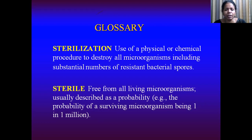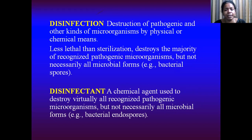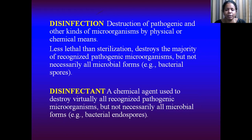So when do we call a surface or a material sterile? When it is free from all living microorganisms, usually described as a probability. Disinfection is the destruction of pathogenic and other kinds of microorganisms by physical or chemical means. It is less lethal than sterilization and destroys the majority of recognized pathogenic microorganisms but not necessarily all microbial forms — it has no effect on the spore form of bacteria. A disinfectant is a chemical agent used to destroy virtually all recognized pathogenic microorganisms but not necessarily all microbial forms.